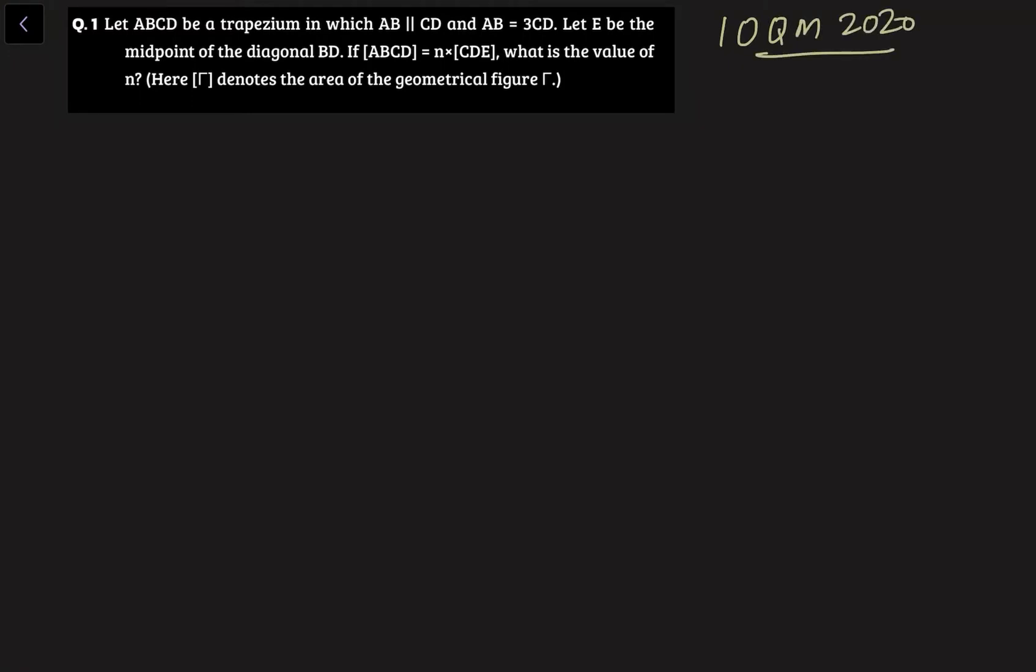Now let's see the question. It says that ABCD be a trapezium in which AB parallel to CD and AB is equal to 3CD. Let E be the midpoint of the diagonal BD. If area of ABCD is equal to N times CDE, we need to find the value of N.